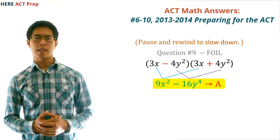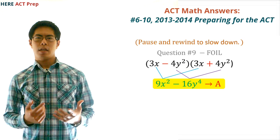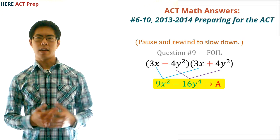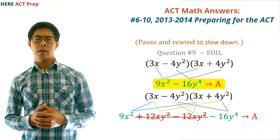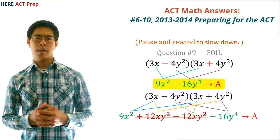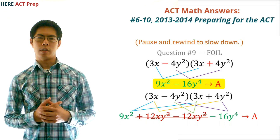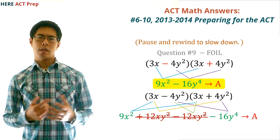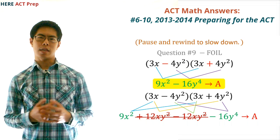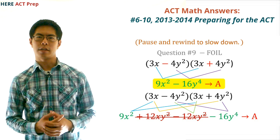If you didn't immediately recognize that the outside and the inside will cancel out, it wouldn't have taken you much longer to find that the outside would be 3x times 4y squared, which equals 12xy squared, and the inside would be negative 4y squared times 3x, which would equal negative 12xy squared. So the positive 12xy squared and the negative 12xy squared cancel each other out.